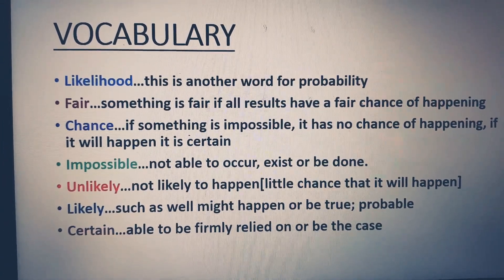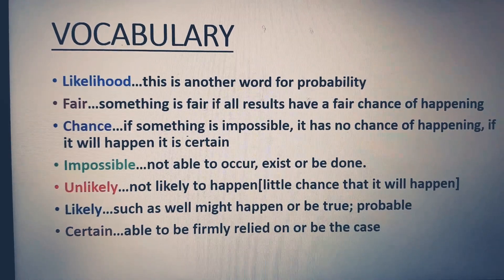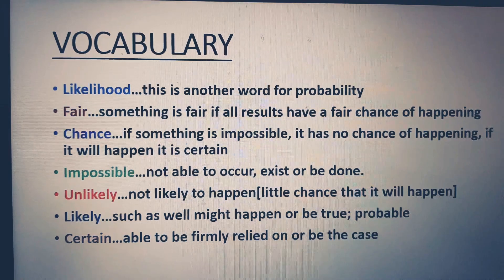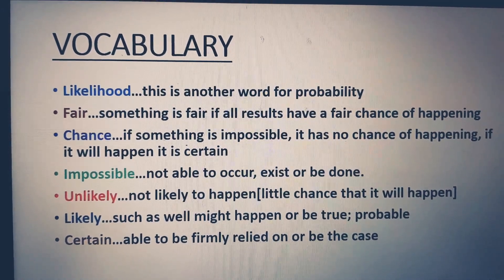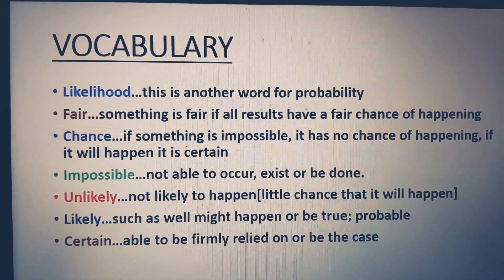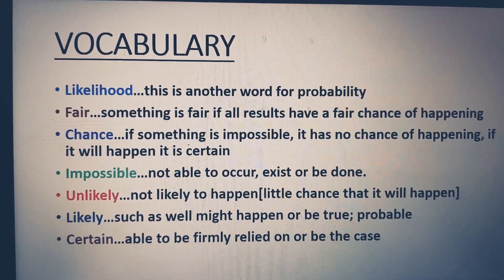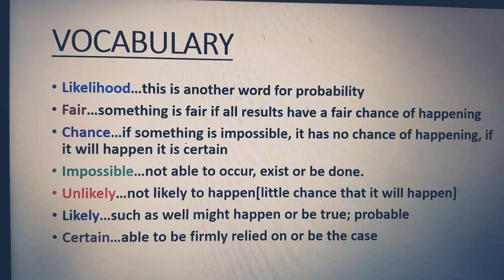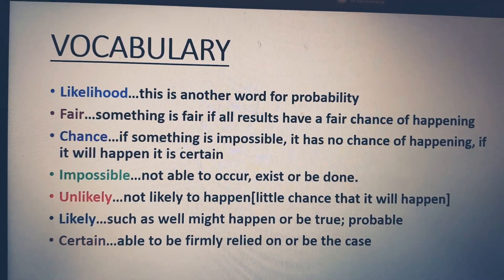If something is impossible, it has no chance of happening. If it will happen, it is certain. Impossible - not able to occur, exist, or be done. Unlikely - not likely to happen or it has little chance that it will happen.